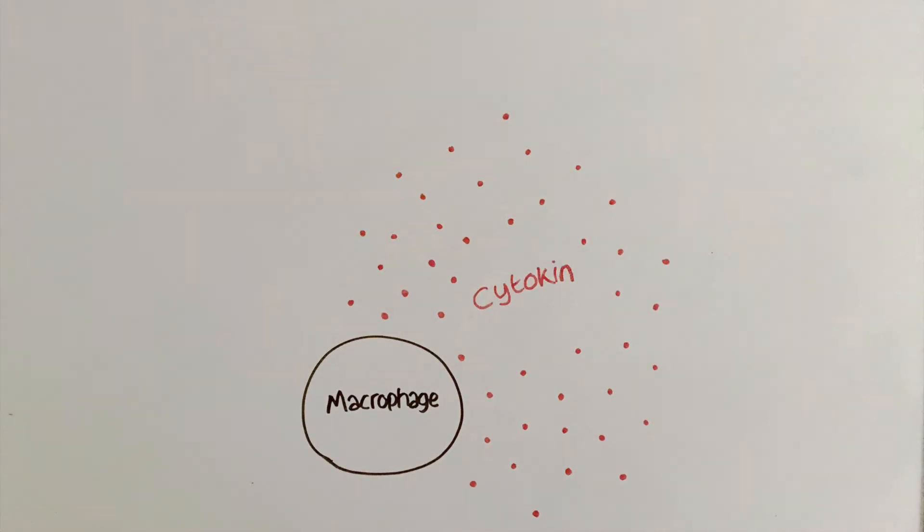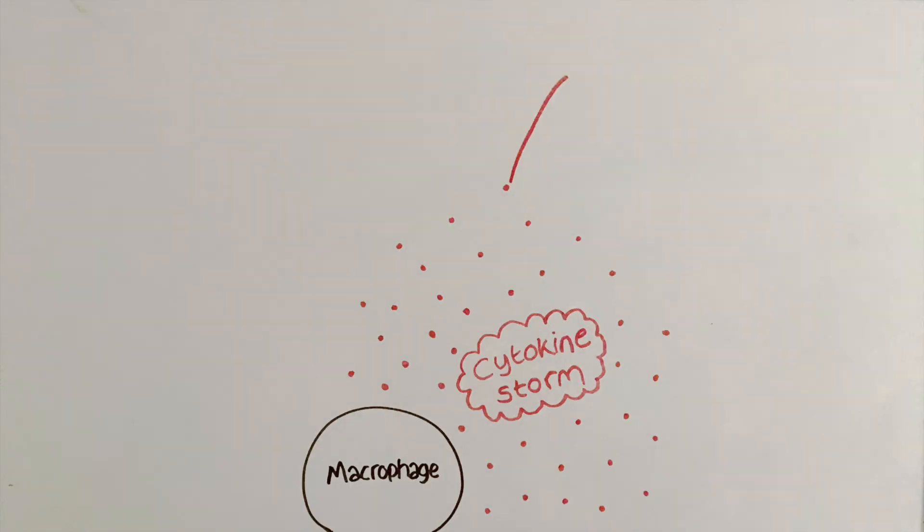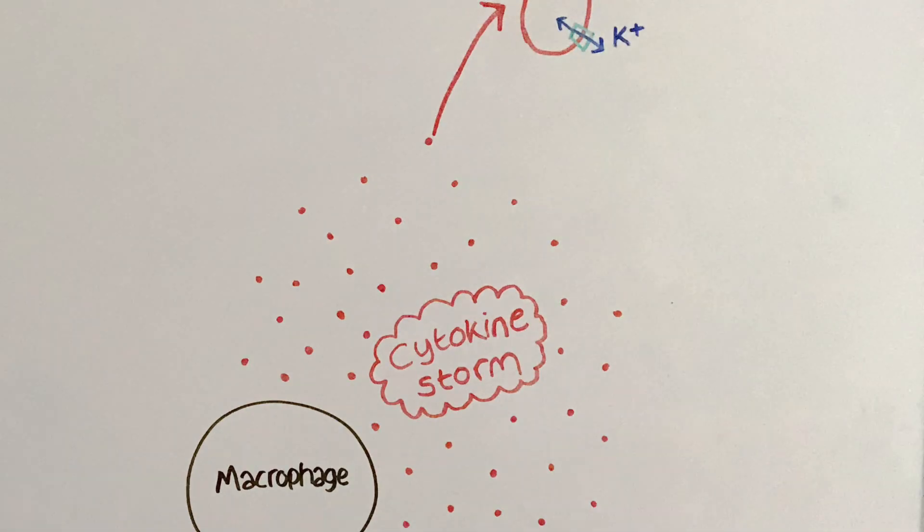Continued cytokine production eventually leads to a cytokine storm. In the kidney, the cytokines affect the renal potassium channels, changing the transport of solutes and water in this organ.